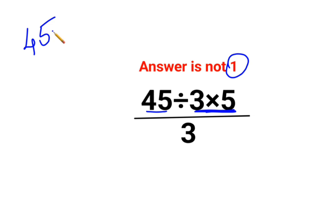3 multiplied by 5 is basically 15. So 45 divided by 15 divided by 3. 45 divided by 15 is 3 upon 3, the answer is 1.